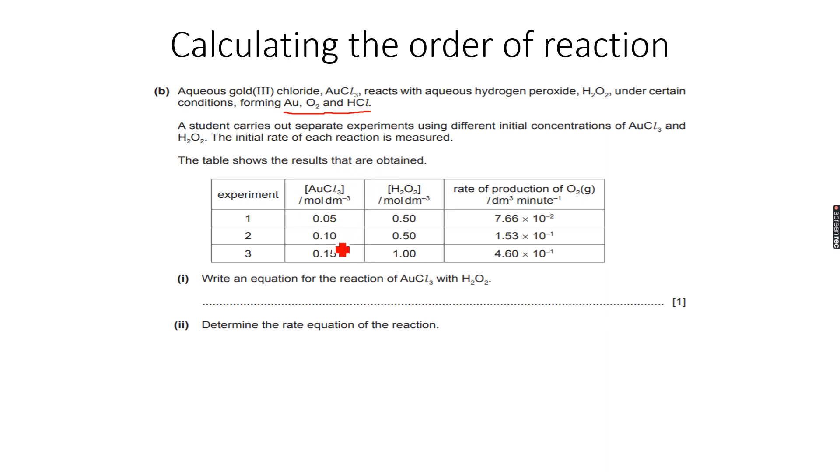We have concentrations of AuCl3, H2O2, three different experiments with different concentrations, and we have the rate of production of O2. They have measured the change in the volume of O2 per unit time, and that's how they've calculated the rate.